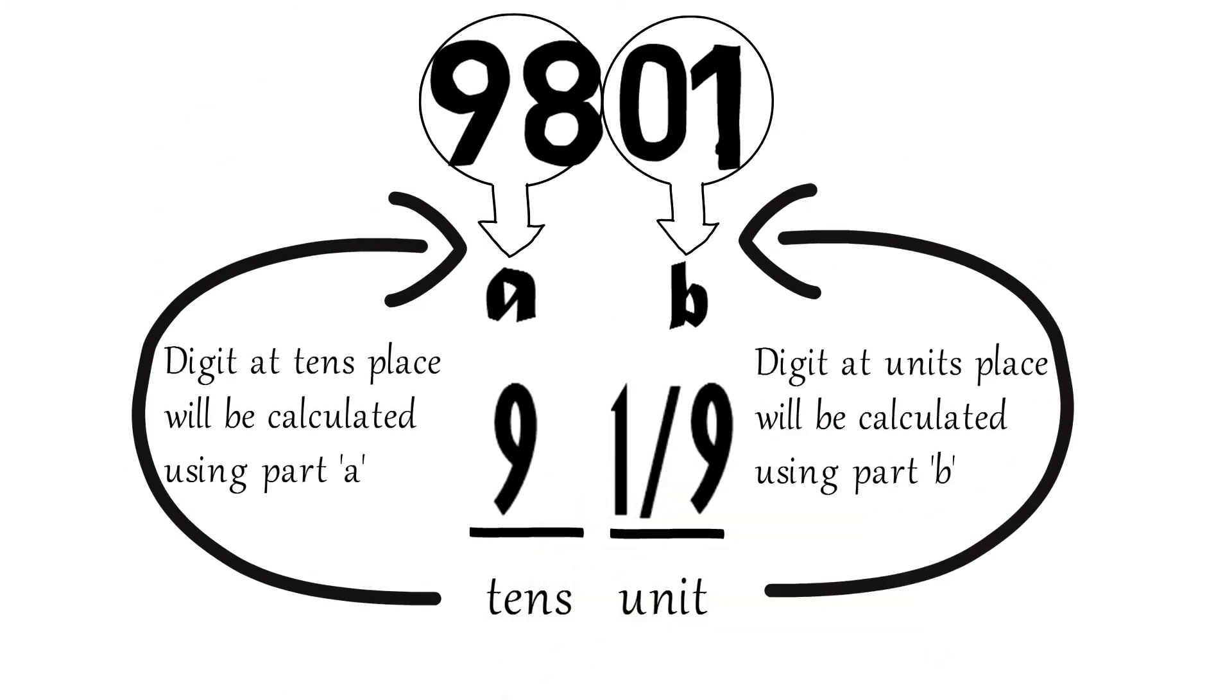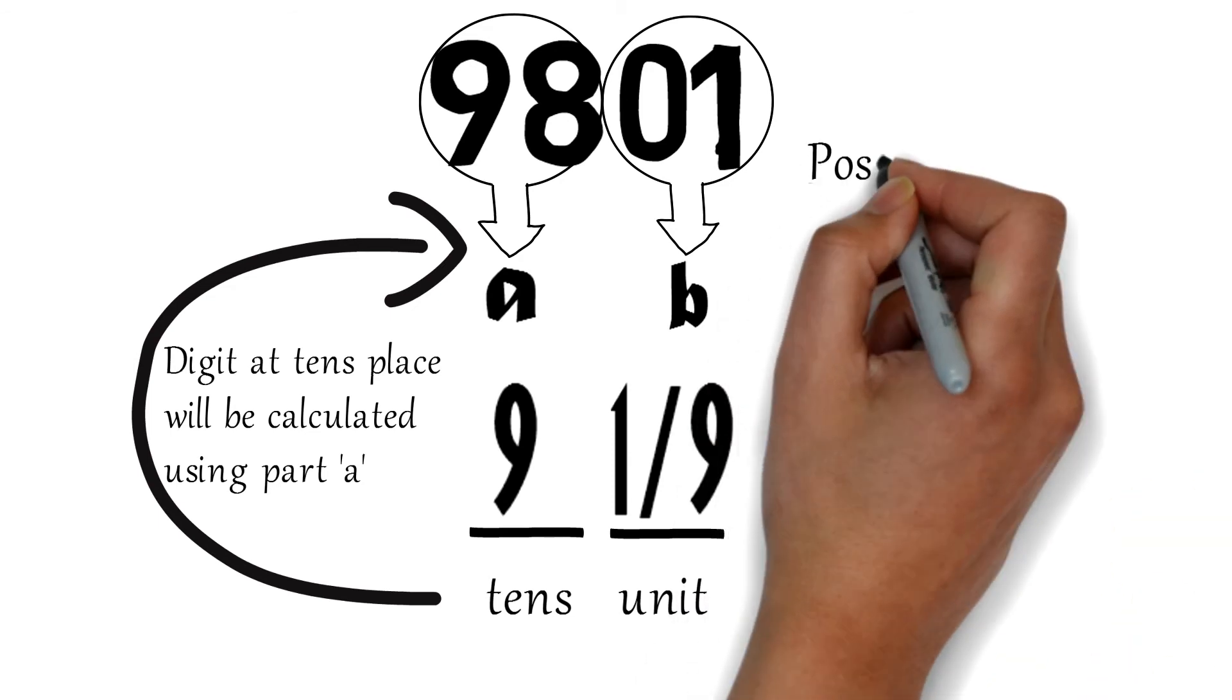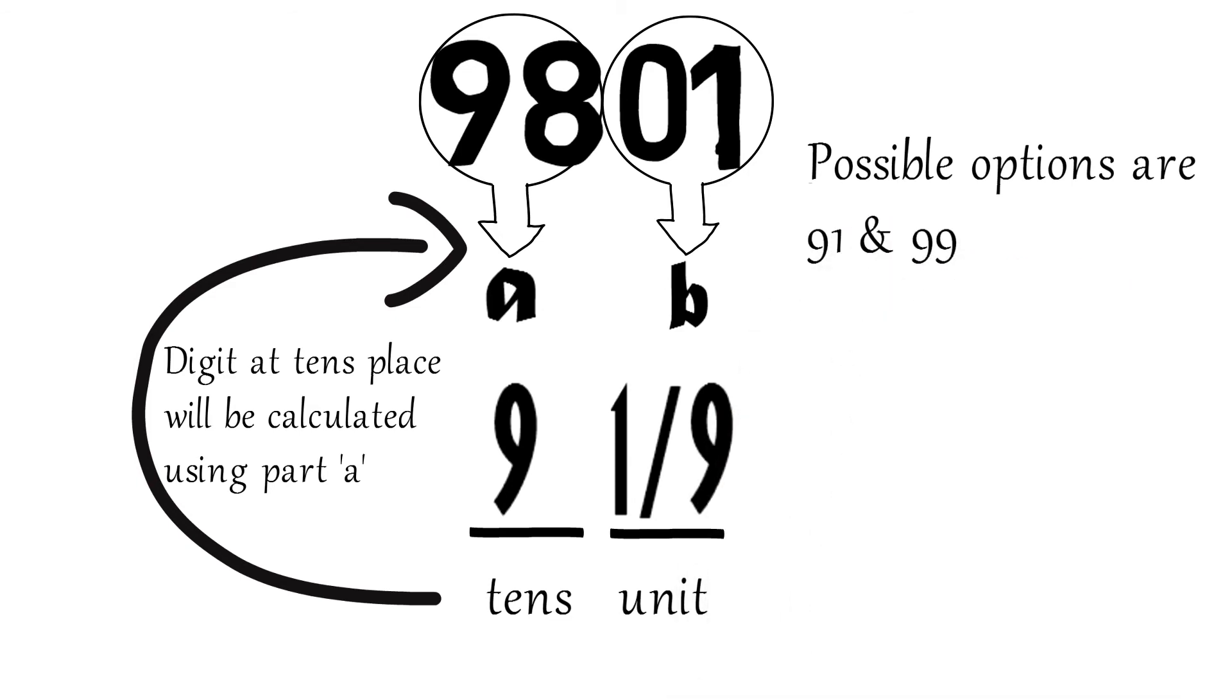So we have two options for the number at units place: the possible numbers are 91 and 99. Now we can easily judge whether 9801 is the square of 91 or 99.